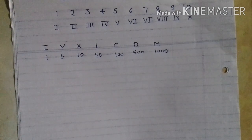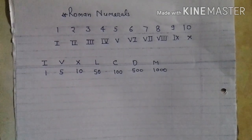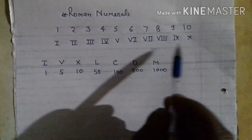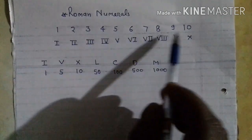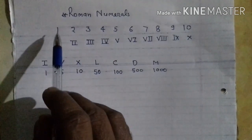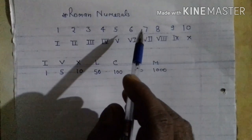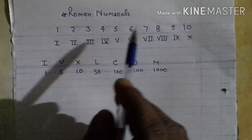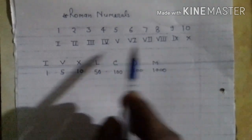Today we are going to study Roman numerals. This is Roman numerals and this is Hindu-Arabic numerals. 1, 2, 3, 4 and so on is Hindu-Arabic numerals, and this is Roman numerals.